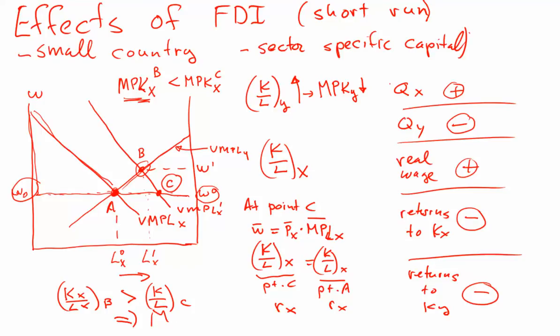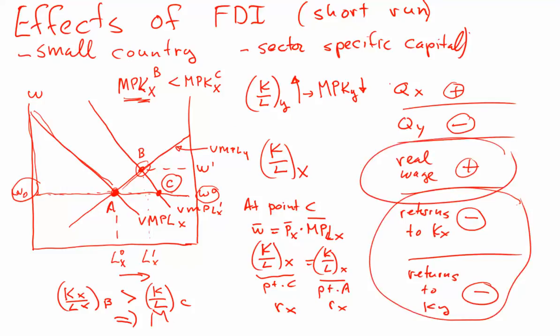To be clear: for the foreign capitalists, they're doing better. These payments to capital and labor describe what's happening within the host country. The domestic capital owners in X face more competition coming from abroad. But because you've got more capital to work with, labor becomes more valuable — workers will see an increase in their real wage as capital moves into this sector, and this has economy-wide effects as workers move out of Y into the expanding sector X.